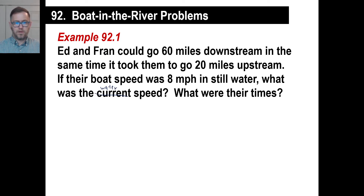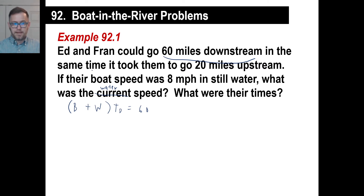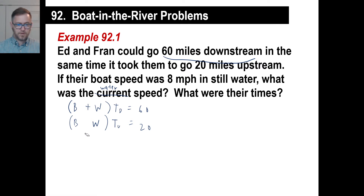They can go 60 miles downstream, so that's the distance downstream, and it equals the rate times the time. Downstream will be boat plus water. The distance is 60 miles. In the same time it took to go 20 miles upstream, so the time is the same. Upstream the rate is boat minus water, and the distance is 20 miles. The boat speed is 8, so we substitute 8 in for B.